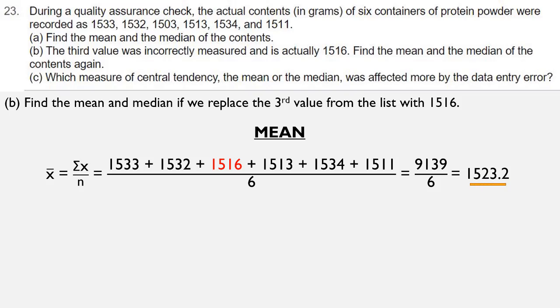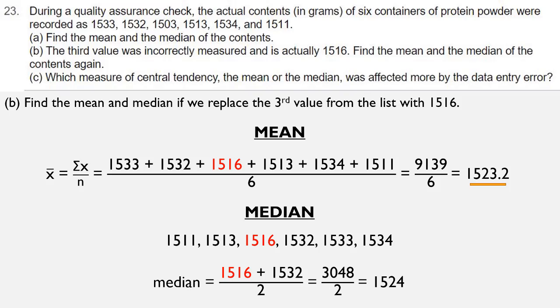Then, when we compute the median, when we put these data values in order, originally the 1503 was the lowest value, but when it changed to 1516, that changed its position in this lineup. So now it's one of the two central entries, and when we compute the median, we add those two central entries and divide by 2, which gives us 3048 divided by 2, which is 1524. So that's our median in part B.